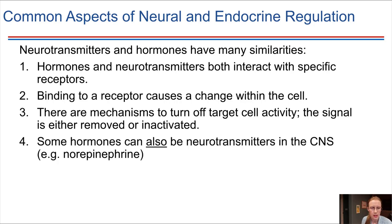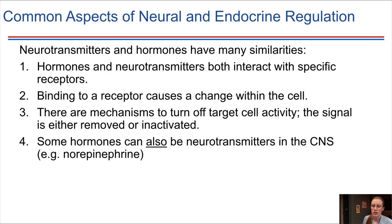Keep in mind that some of the molecules we've already seen as neurotransmitters are going to show up again, acting as hormones. A good example of this is norepinephrine — we've seen this as a neurotransmitter, but in this chapter we're going to be seeing it acting as a hormone. So sometimes the same molecule can be used in two different ways in the body.